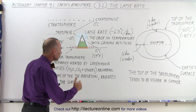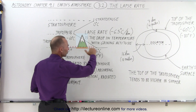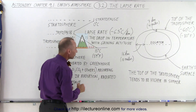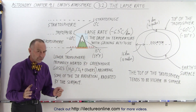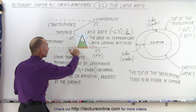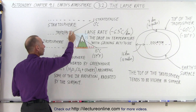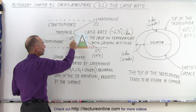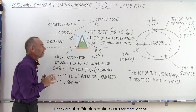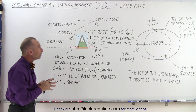We've seen in the previous video that the average surface temperature of the Earth is around 15 degrees Celsius, which is about 59 degrees Fahrenheit. We also know that at the top of the troposphere, when we get to the tropopause, the temperature is about minus 60 degrees centigrade, which is about minus 80 degrees Fahrenheit.